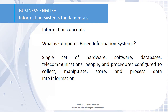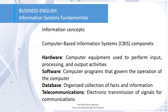What is a computer-based information system? It is a single set of hardware, software, databases, telecommunications, people, and procedures configured to collect, manipulate, store, and process data into information. The CBIS components include hardware — the equipment — software — all the computer programs — a database, which is an organized collection of facts and information, and telecommunications, which is the electronic transmission of signals for communications.